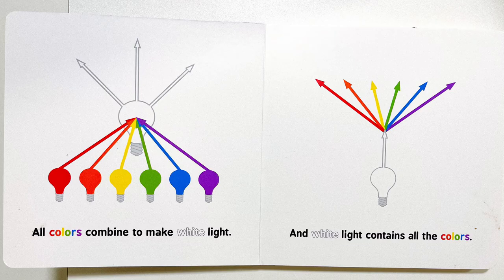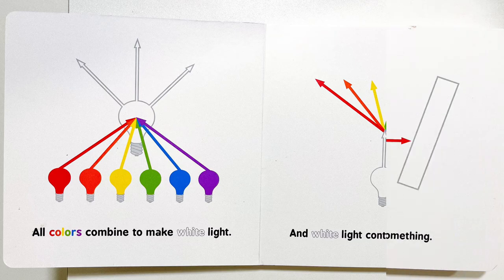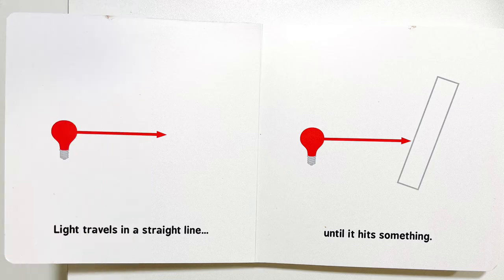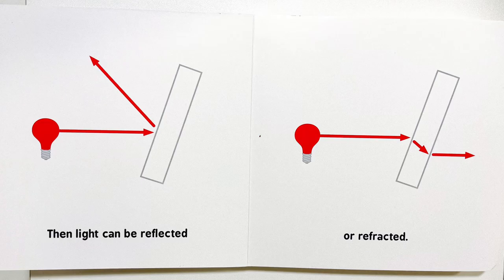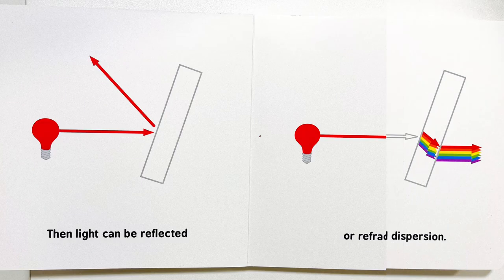All colors combine to make white light, and white light contains all the colors. Light travels in a straight line until it hits something. Then light can be reflected or refracted.